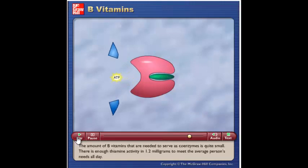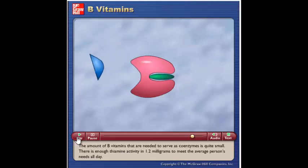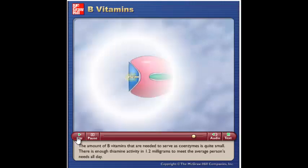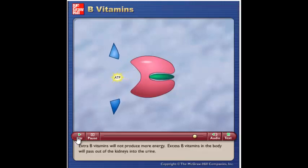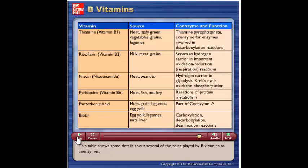The amount of B vitamins needed to serve as coenzymes is quite small. There is enough thiamine activity in 1.2 milligrams to meet the average person's needs all day. Extra B vitamins will not produce more energy. Excess B vitamins in the body will pass out of the kidneys into the urine. This table shows some details about several of the roles played by B vitamins as coenzymes.